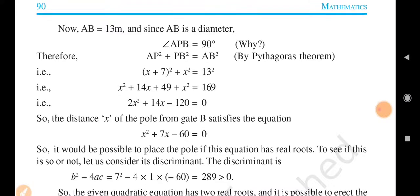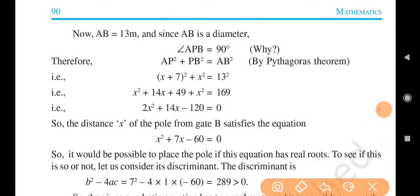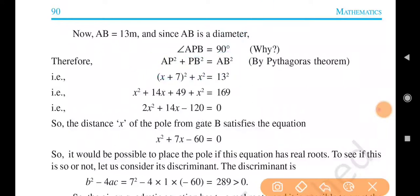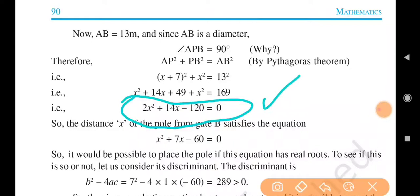The difference of the distance of the pole from the two gates: AP minus BP equals 7 meters. Since the difference is 7, AP equals x plus 7 meters. Now, the angle APB is 90 degrees because it is a right angle at the boundary.